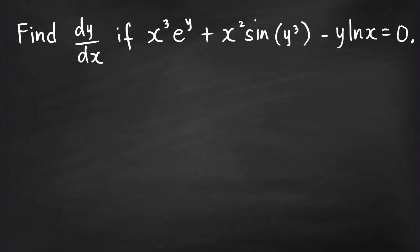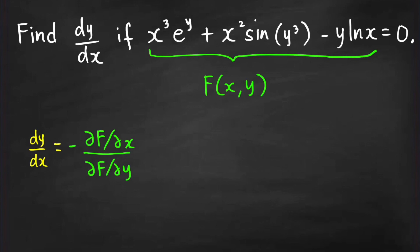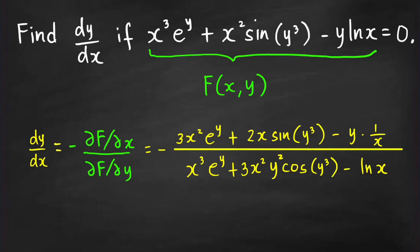Let's try one more problem using the fast technique. Find dy/dx given that x³e^y + x²·sin(y³) − y·ln(x) = 0. This is already in the form f(x,y) = constant, so f(x,y) is the left-hand side. For ∂f/∂x, treating y as constant: copy e^y and take the derivative of x³ giving 3x².